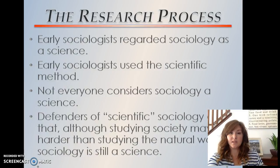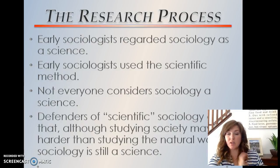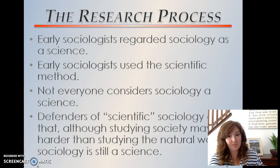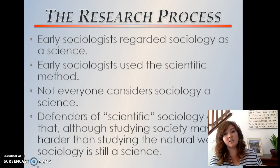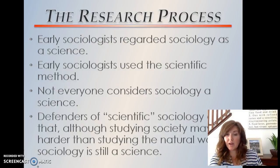Thinking about sociology as a science — a lot of people still have some issues with that because it is a soft science, and it is hard to study society because of all the variations within our society. But although studying society might be harder than studying the natural world, it is still science because we still adhere to the scientific method, we still adhere to strict standards, and we look for sociological patterns and not just individual experiences.